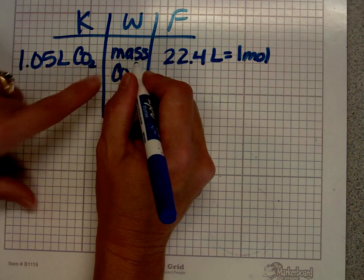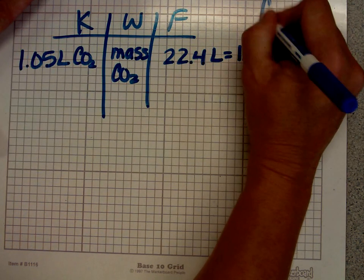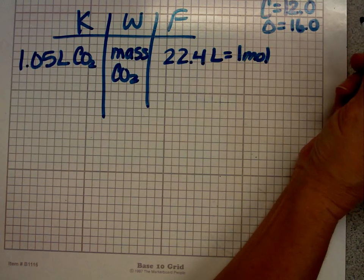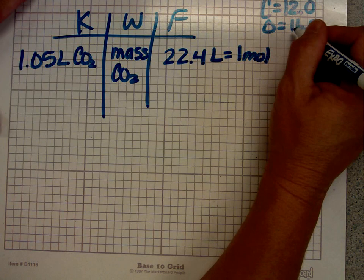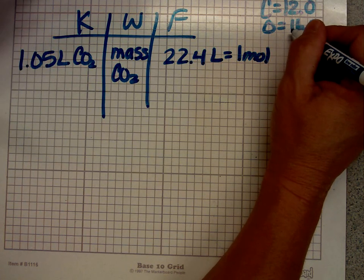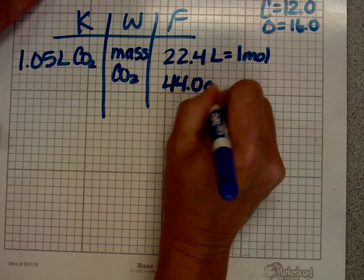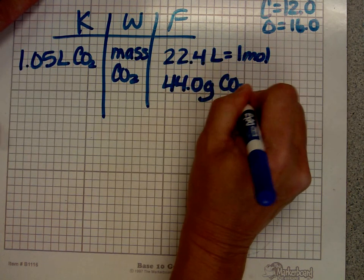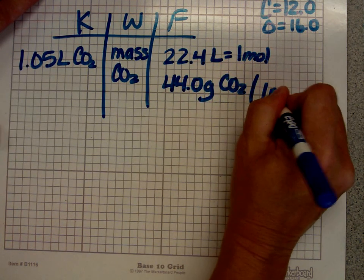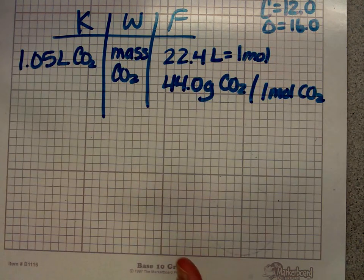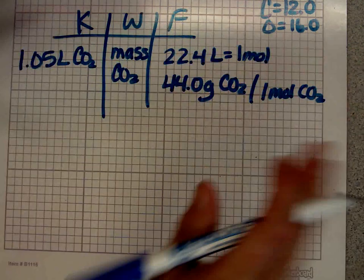When I look at carbon, carbon's 12.0 and oxygen is 16.0. I have two oxygens, so 16 and 16 is 32, plus 12 is 44.0. So it's 44.0 grams of CO2 for 1 mole of CO2. That's just laying my groundwork; I haven't started to solve the problem yet.